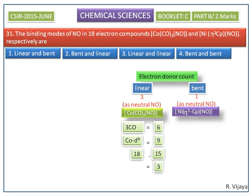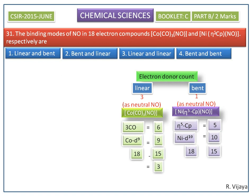Next we do the electron donor count for the nickel complex in the neutral method. Cyclopentadienyl can donate five electrons and nickel contributes 10 electrons, giving a total of 15 electrons. Since it is also an 18-electron compound, we subtract 15 from 18 to get three. Here also nitrosyl must donate three electrons.